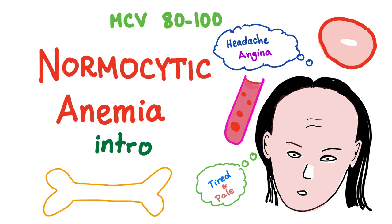Normocytic means normal-sized RBCs. The MCV is 80 to 100 — that's the normal MCV, and that's why it's called normocytic anemia.